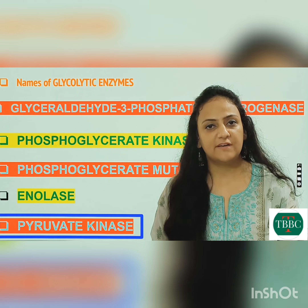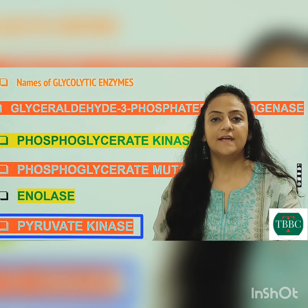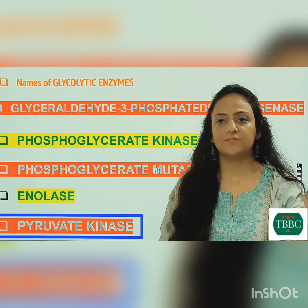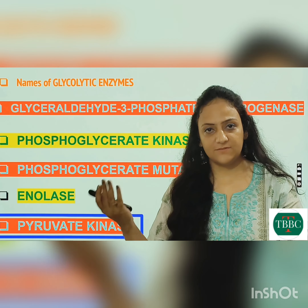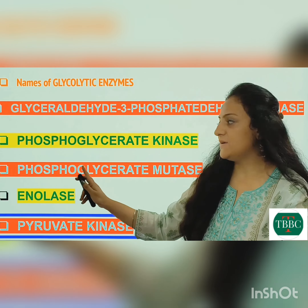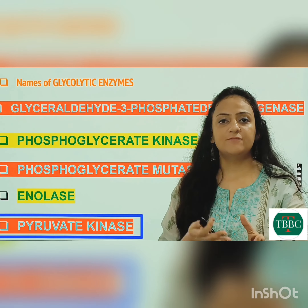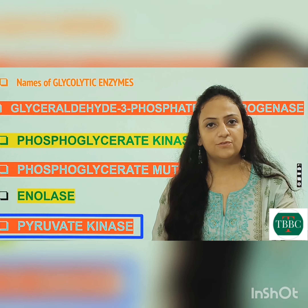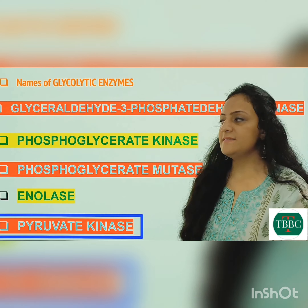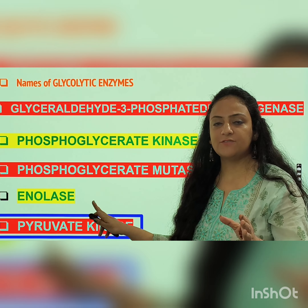Then 1,3-bisphosphoglycerate is converted to 3-phosphoglycerate with the help of enzyme phosphoglycerate kinase, and ATP is released. This is a very good example of substrate level phosphorylation, meaning ATP is formed directly from the substrate.